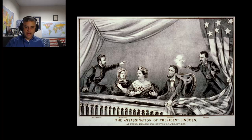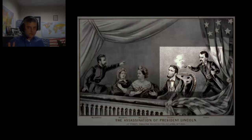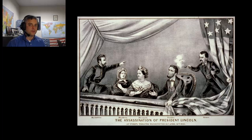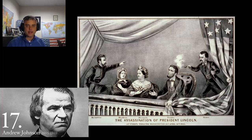Congressional leaders had a plan of their own, which carefully retained control of the Reconstruction process in Congress's hands. This is going to come into play after Lincoln's assassination in 1865. The problem for Congress is that Lincoln has a lot of political capital — he's the guy who won the Civil War. But when Johnson comes into office, Congress is really going to be able to push back against presidential Reconstruction, because Johnson is going to adopt a lot of the same ideas that Lincoln had.